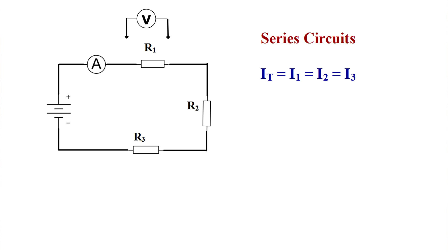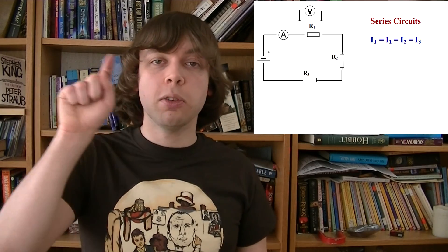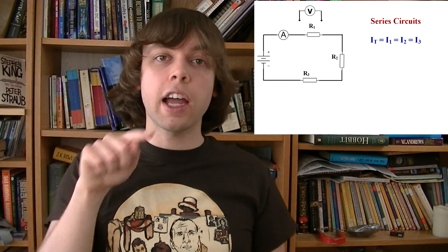In a series circuit therefore, all the components have the same current. There's one continuous path with no splits, so the entire loop has to have the same flow, has to have the same current.